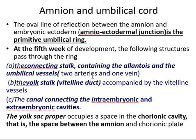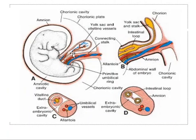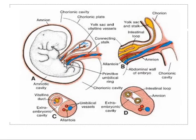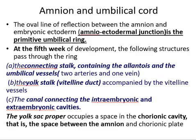The allantois consists of two arteries and one vein. Number two is the yolk sac — the vitelline duct accompanied by the vitelline vessels. Here you can appreciate the vitelline duct and the vitelline vessels within the umbilical ring. Number three is the canal connecting the intraembryonic and extraembryonic cavities.